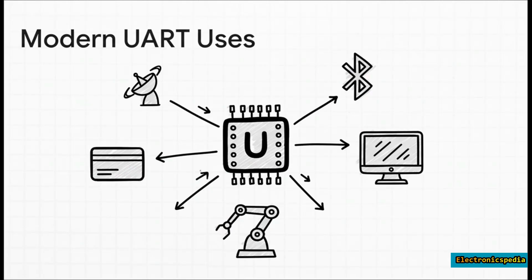And because it's so simple and cheap, you find UARTs all over the place in the world of embedded systems and DIY electronics. It's the absolute go-to for connecting little modules like GPS, Bluetooth, or RFID to a main microcontroller like an Arduino or a Raspberry Pi.